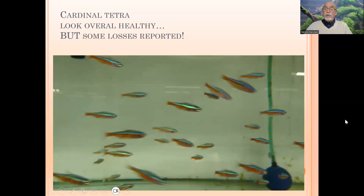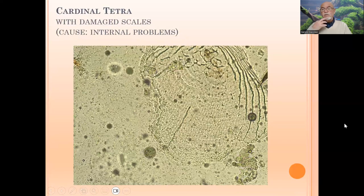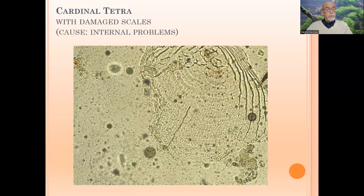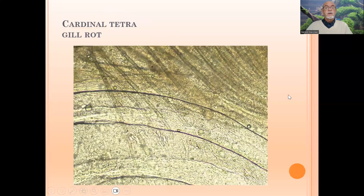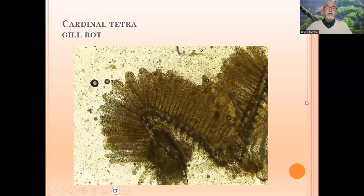In particular when you have losses, you have to check — there is something wrong. The first thing we noticed when we took skin scrapings was the scales were badly damaged. This means there is an internal problem: some minerals, vitamins, or nutrients cannot get to the scales, impacting the good development of the scales. The gills also had some gill rot — you can see this part is completely gone, caused by bacterial infection.